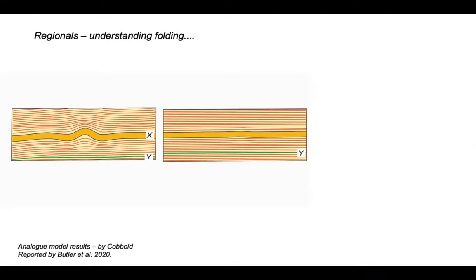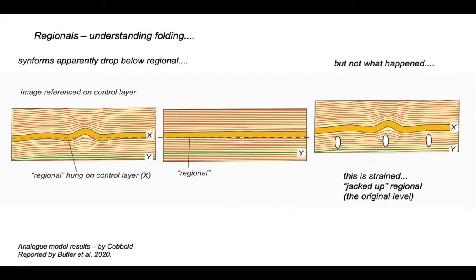Now, we can also use the concept of regionals to understand folding. So you might infer that a buckle fold, such as on the left-hand side diagram here, involves the antiform going up and the synform going down. We might be tempted to construct a regional like this for the base of the orange horizon. However, this is misleading. Let's consider this section in here.